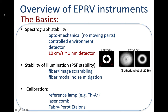You also need a highly efficient and very stable detector. To remind us what we're talking about: a Doppler shift of 10 centimeters per second corresponds typically to just a small shift of one nanometer on the detector.